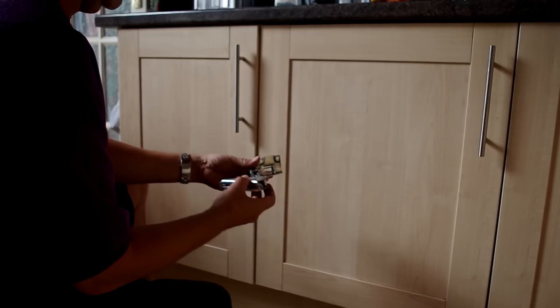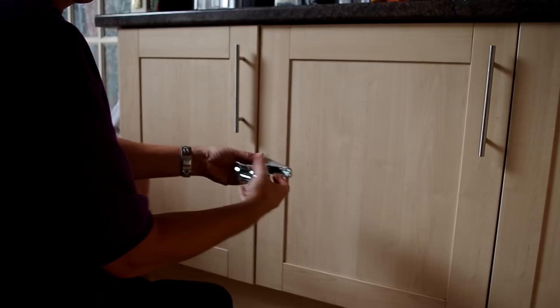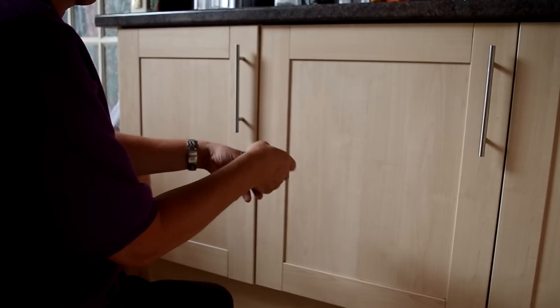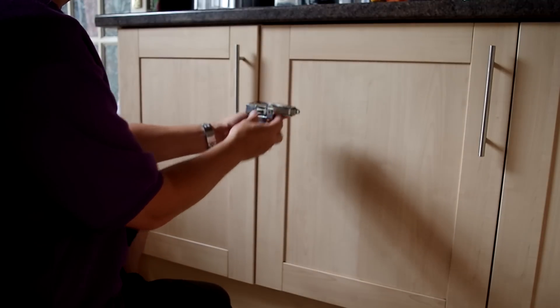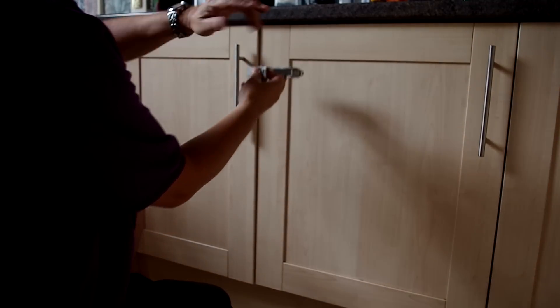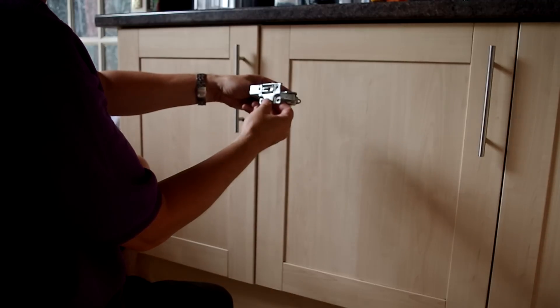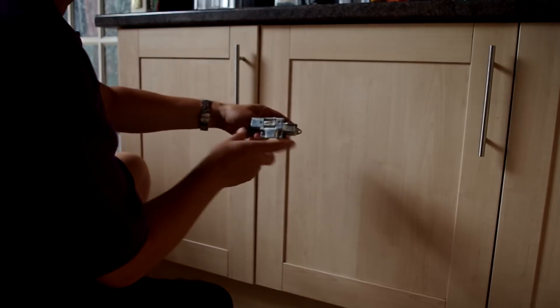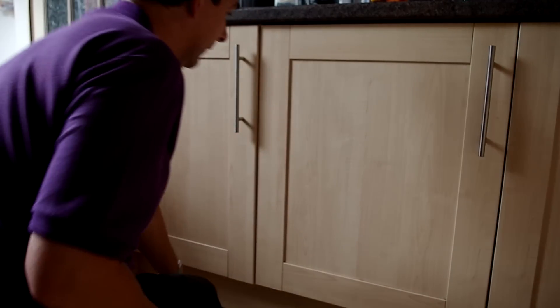So that's the hinge there. That screws inside the top of the door like so, and then that would screw to the outer door. I'll just show you how that happens. So that's the bracket, we'll put that aside.